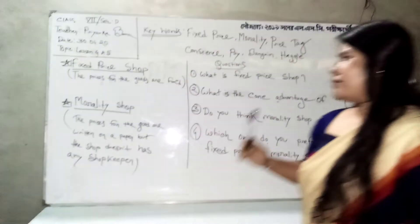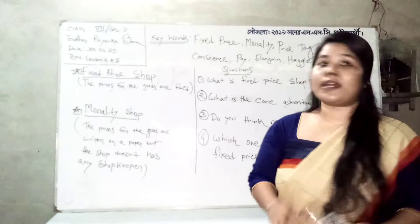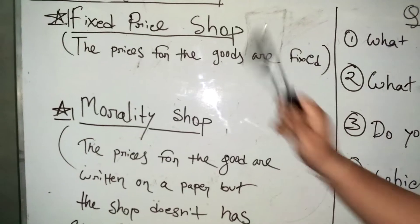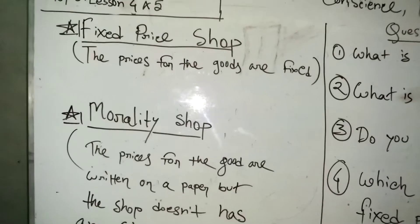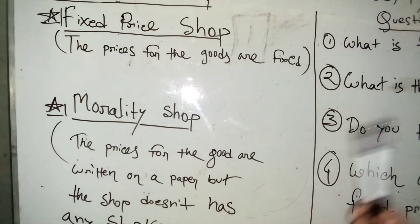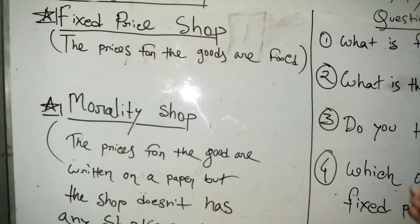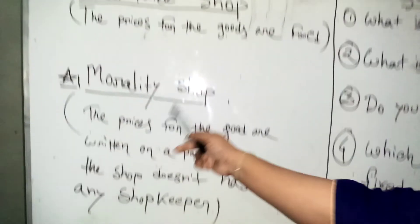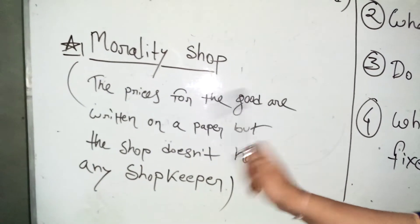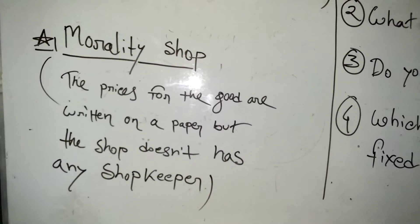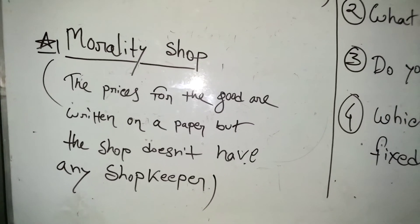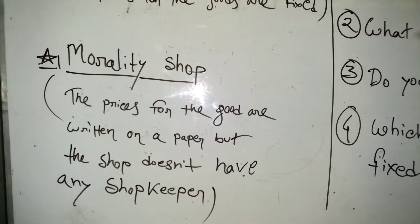Starting with the noun 'fixed price shop' — fixed means the price is set. Lesson 4 is about a kind of shop where the prices of the goods are fixed. On the other hand, a morality shop is a kind of shop where the prices are written on a paper but the shop doesn't have any shopkeeper. From these two passages we can make a difference between fixed price shop and morality shop.